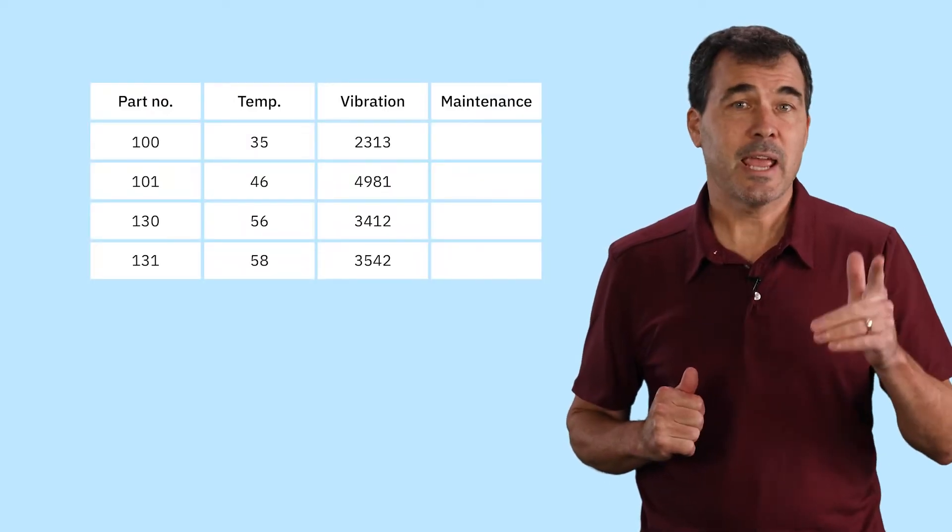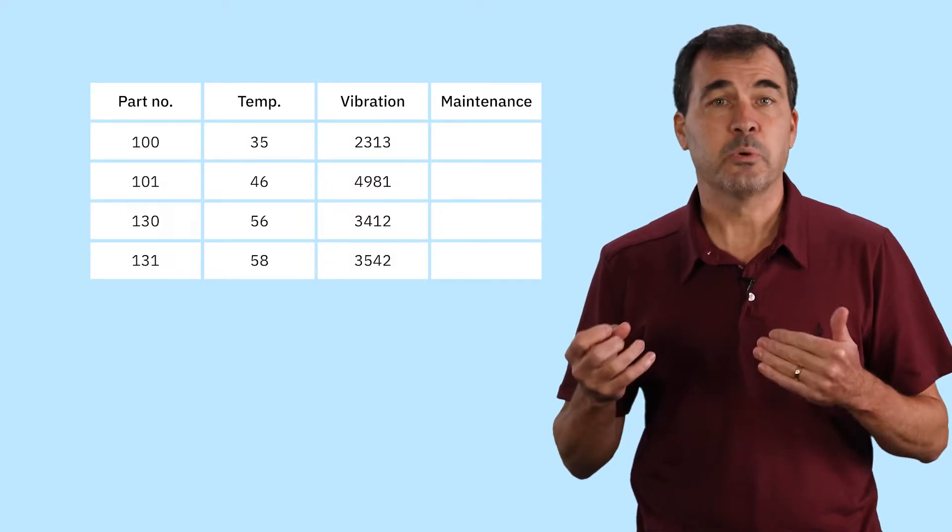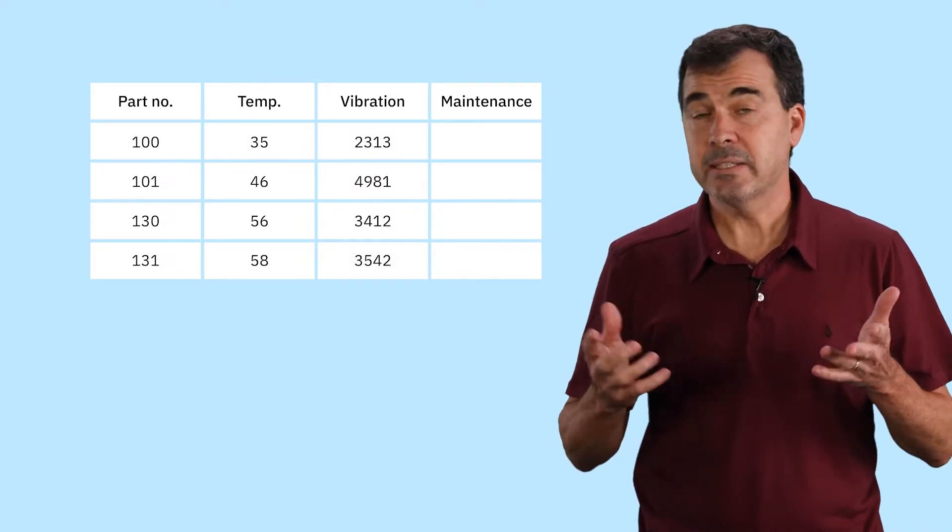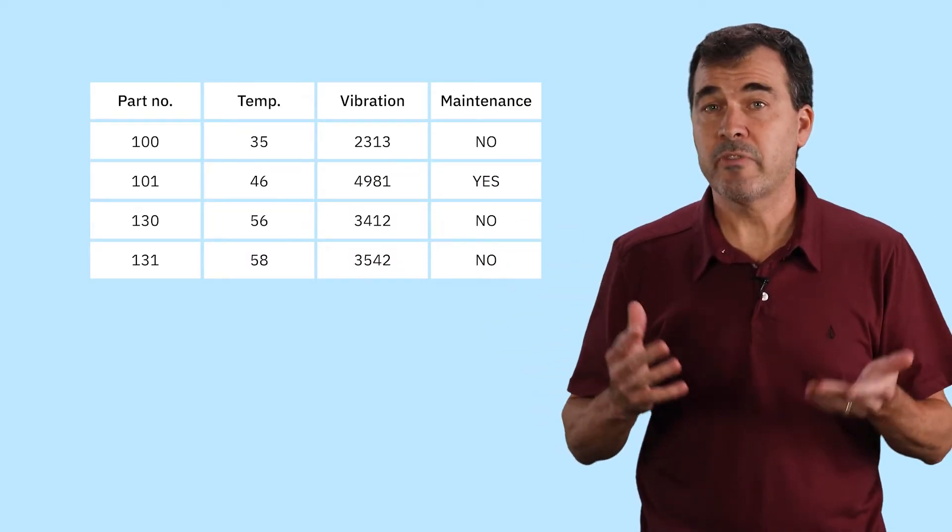This table contains the information we've collected. The goal is to get our model to use the data to predict the label: maintenance needed, yes or no. And basically, that's supervised learning.